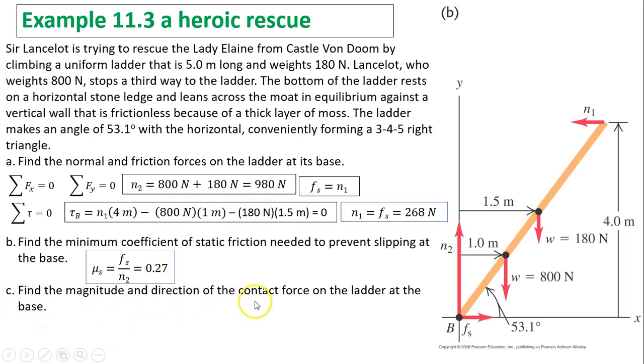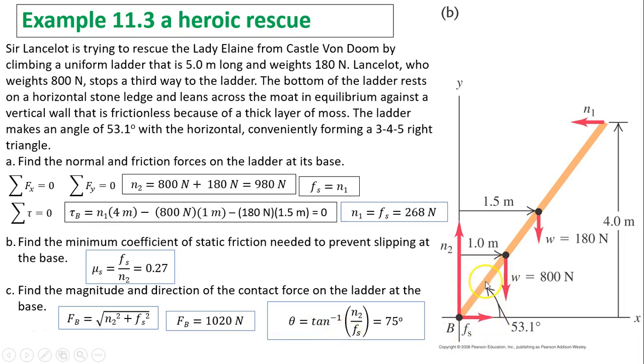Part C: Find the magnitude and direction of contact force on the ladder at the base. Contact force is the combination of N2 and Fs. Contact force basically has two components: one is Fs, the other is N2. We can use the Pythagorean theorem to find the magnitude. N2 squared plus Fs squared: 268 squared plus 980 squared gives 1020 newtons. To find the direction, we use inverse tan of opposite over adjacent, which gives about 75 degrees.